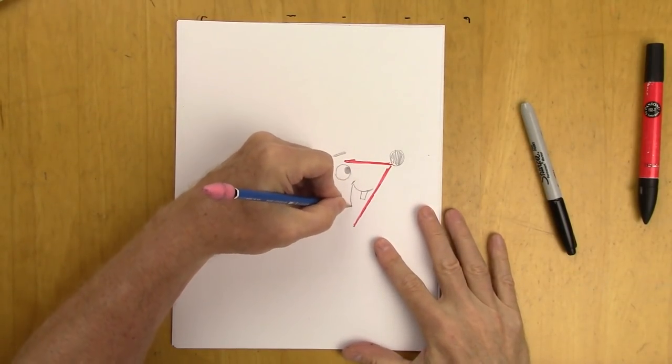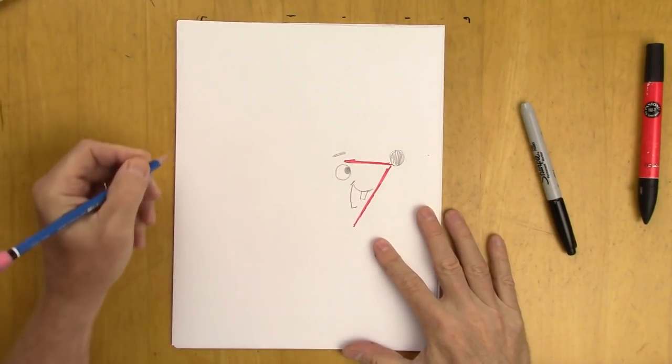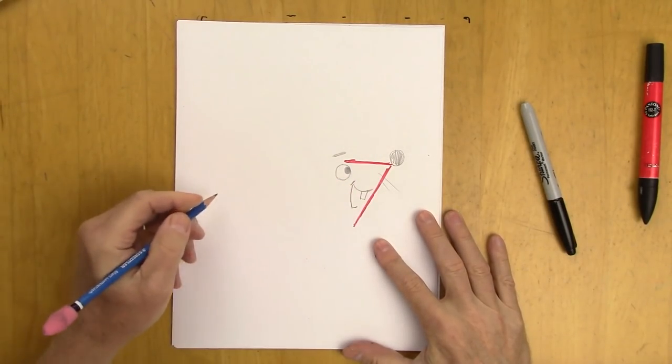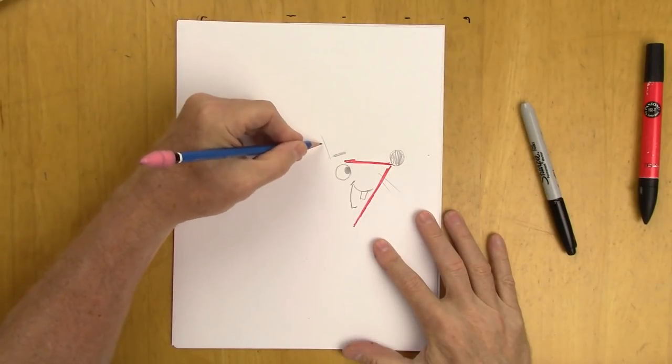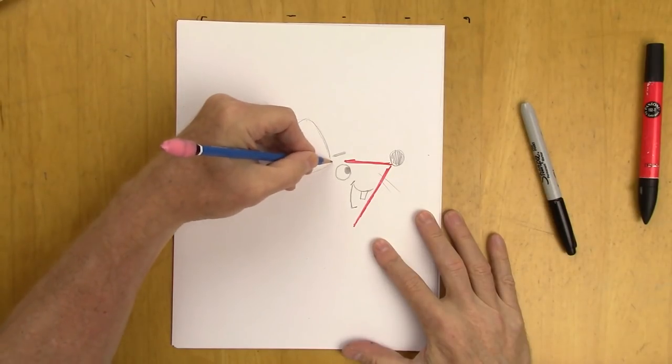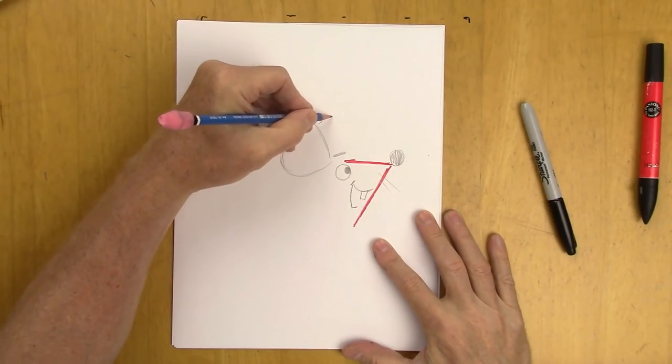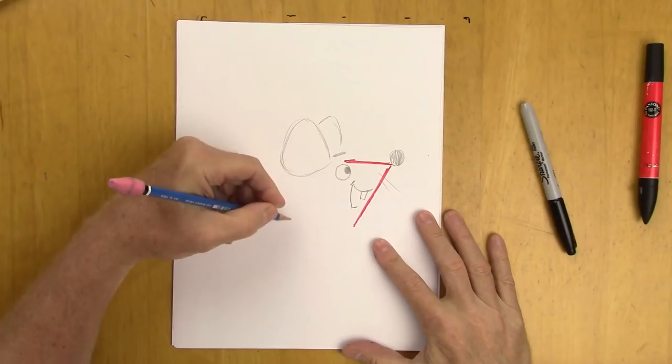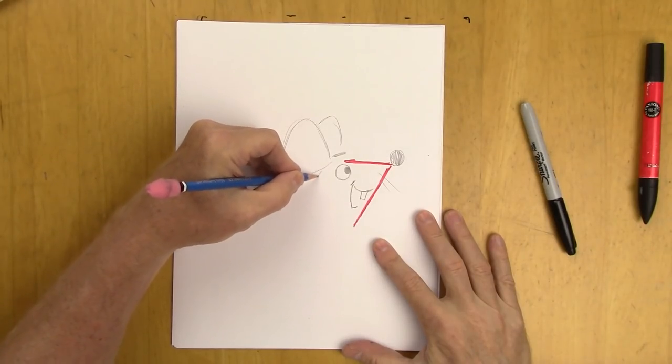A few whiskers, and now behind we'll have those big mouse-like ears. It's like a guitar pick shape, isn't it? And repeat it over here. We'll bring the head back this way.